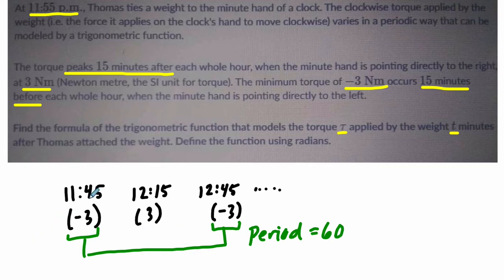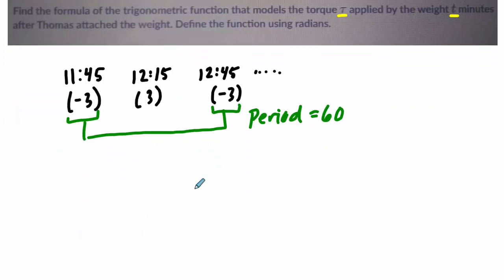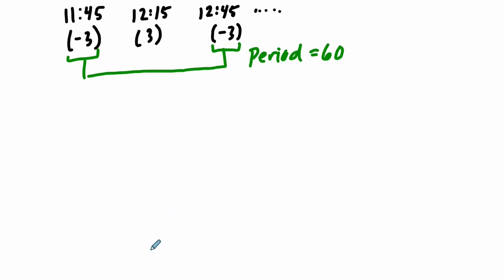Take 60 minutes to go from one minimum to the other. Remember, that's the way the period works. You go from one max to a max, or a min to a min. Okay, so that's our period. And if we sketch this thing out, we can see clearly what the midline and amplitude will be.